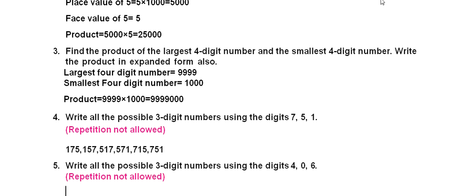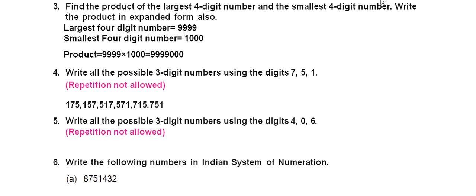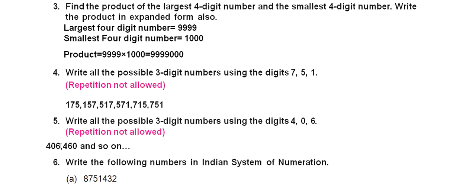Next, write all possible 3-digit numbers using the digits 4, 0, and 6. Here, note that we cannot write 046 as a 3-digit number, because any number starting with 0 — like 046 — is basically just 46, which is a 2-digit number. So we will not start any number with 0. The possible numbers include 406, 460, and so on. Find the rest yourself — that is your homework.